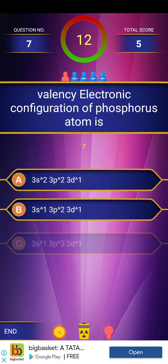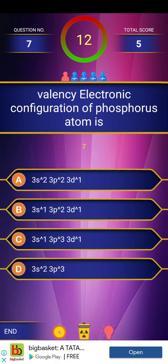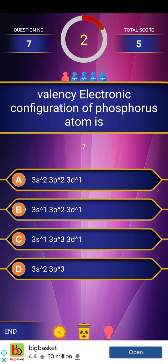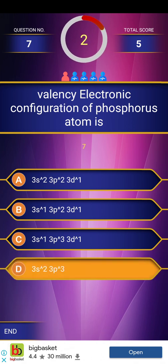Next question: Valency electronic configuration of phosphorus atom is. We have already discussed this in the previous video. The answer is 3s2 and 3p3.